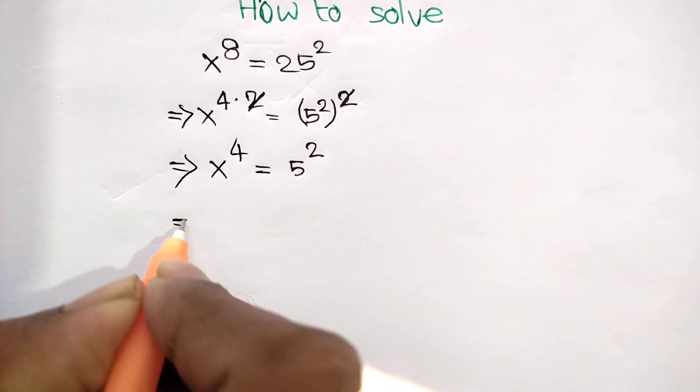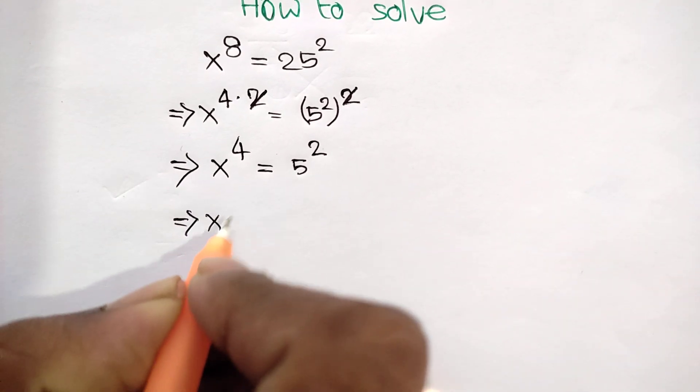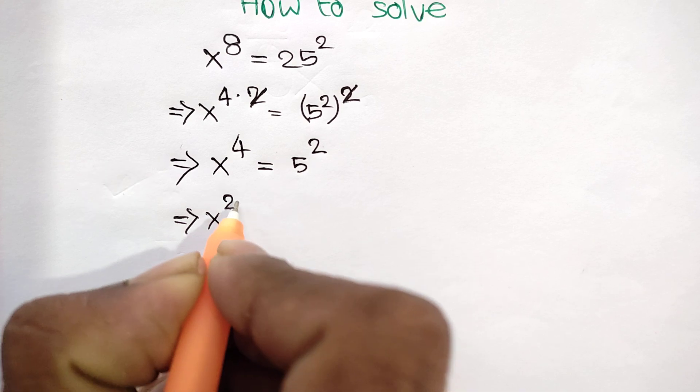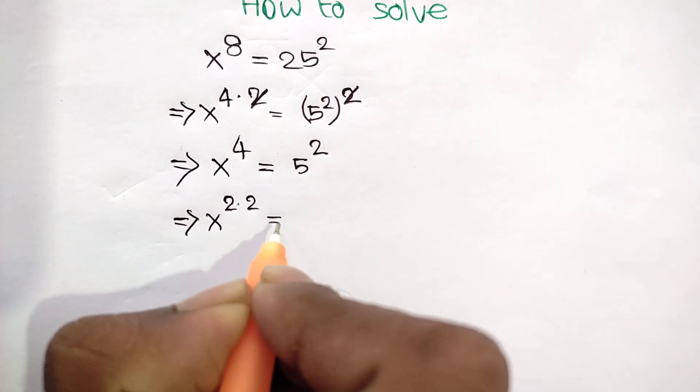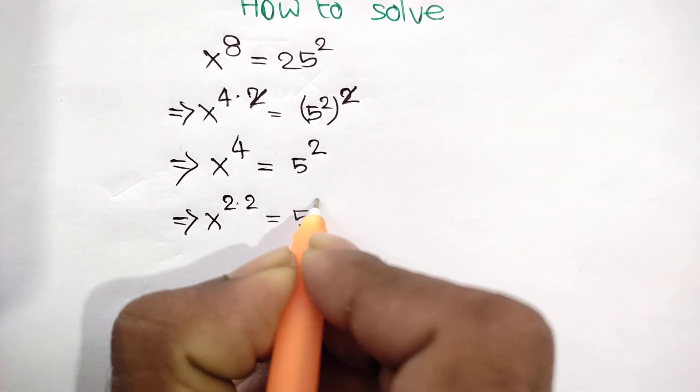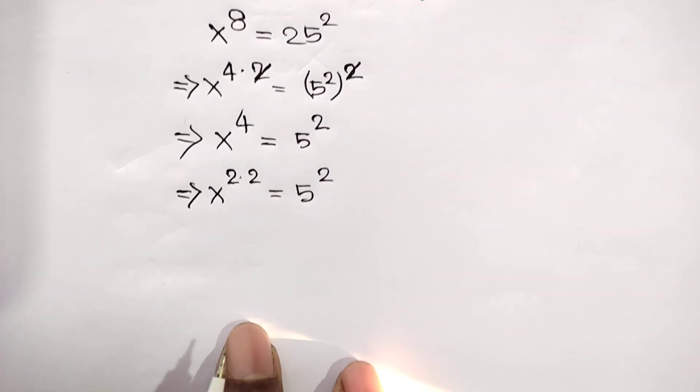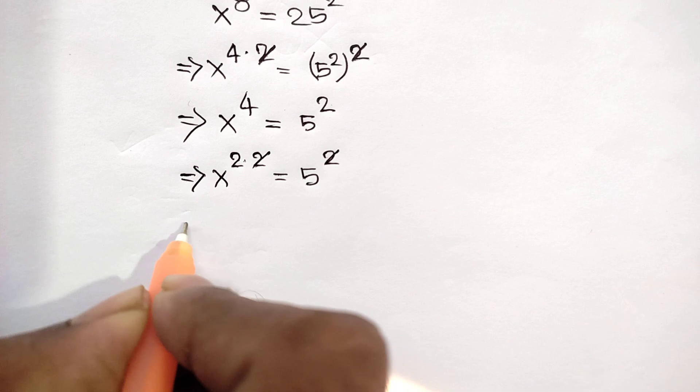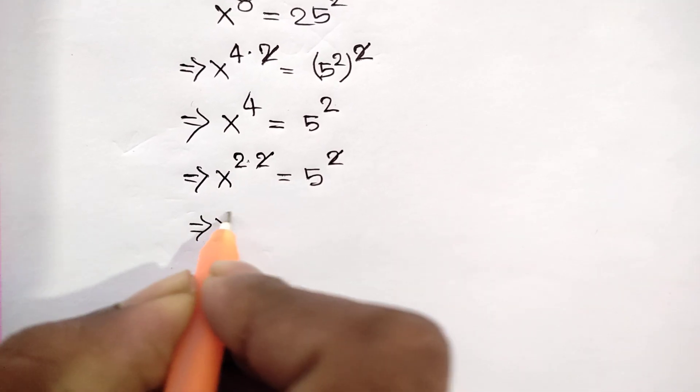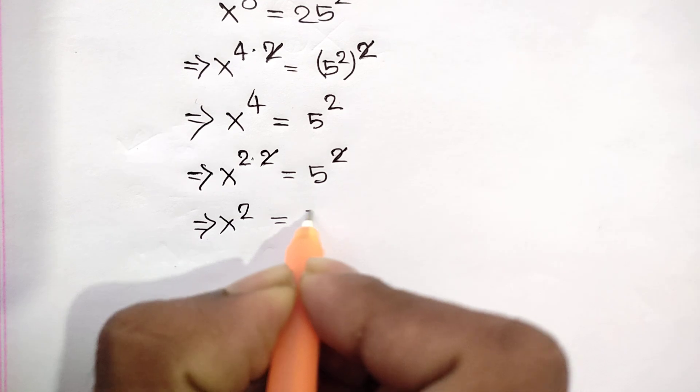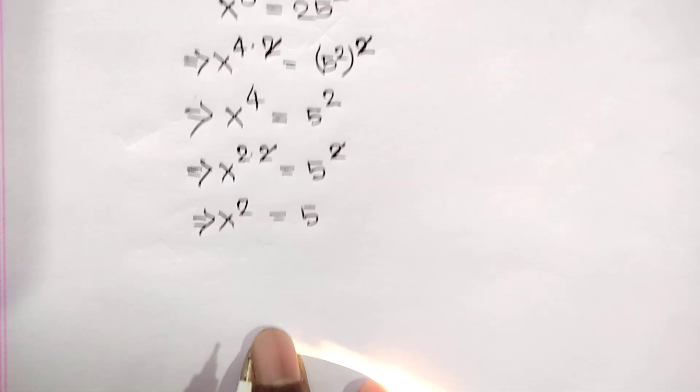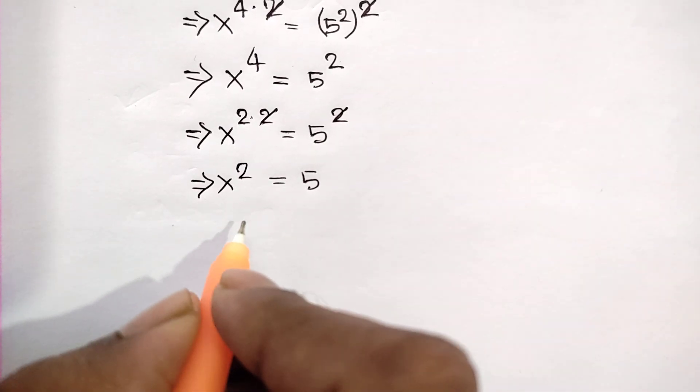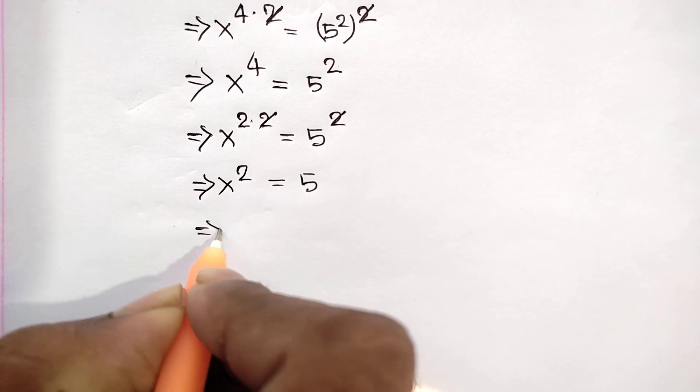Now we can write x 2 times 2 equal to 5 square. This 2 cancels 2, so we can write x square is equal to 5.